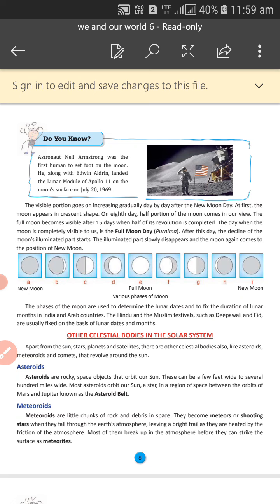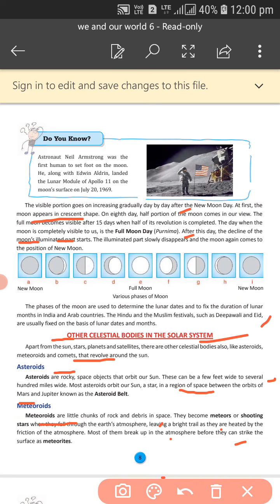Today we will continue with the next topic. Its name is other celestial bodies in the solar system. Other celestial bodies, heavenly bodies: Sun, stars, planets and satellites.